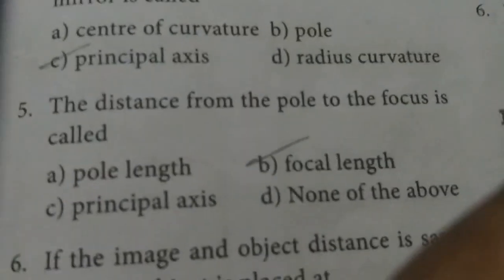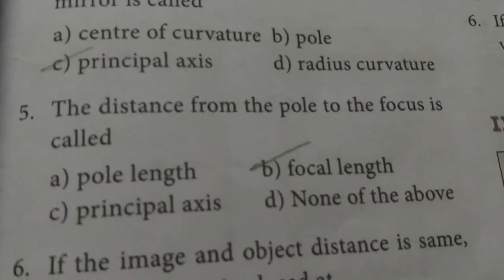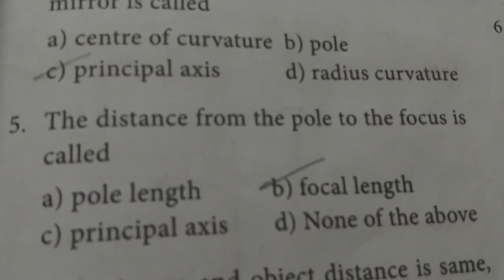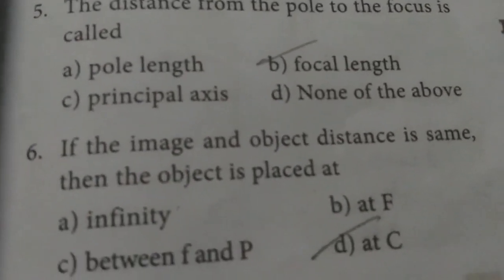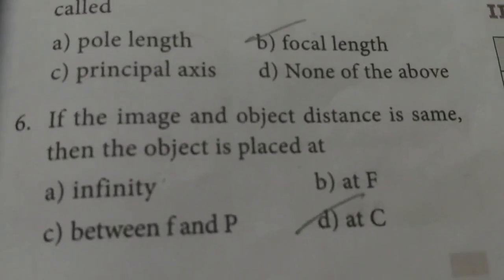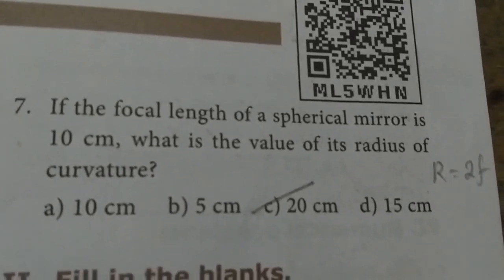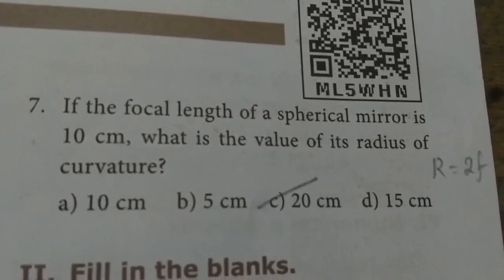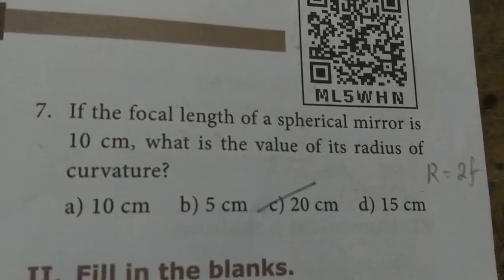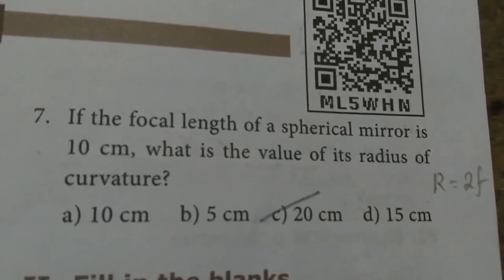Question 5: the distance from the pole to the focus is called focal length. Question 6: if the image distance and the object distance are the same, then the object is placed at C. Question 7: if the focal length of a spherical mirror is 10 cm, what is the radius of curvature? Using the formula R = 2F, the answer is 20 cm.